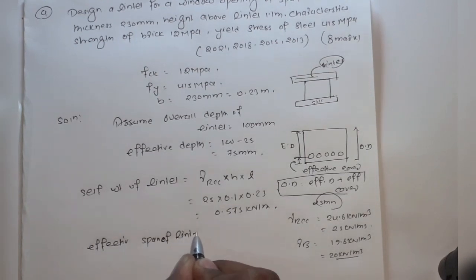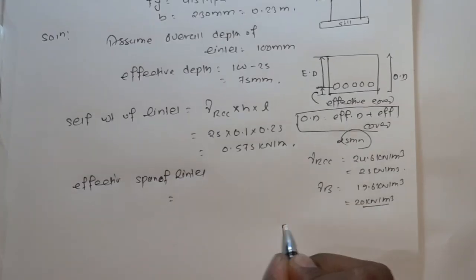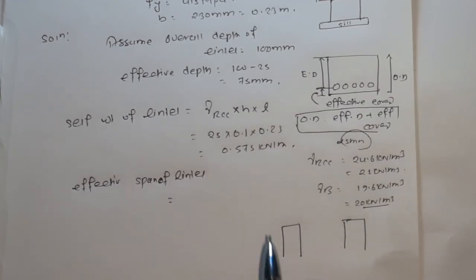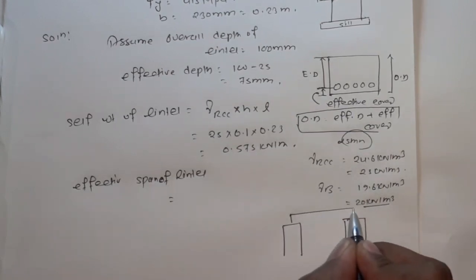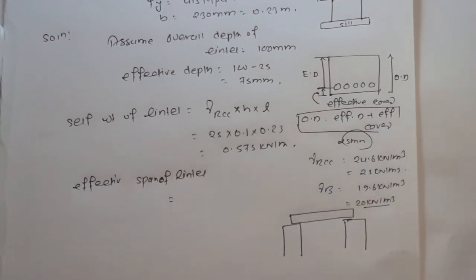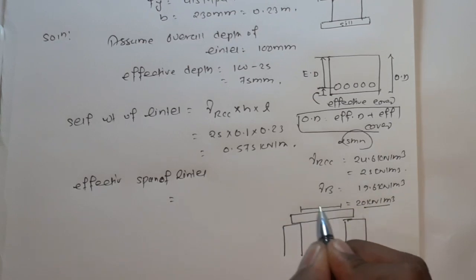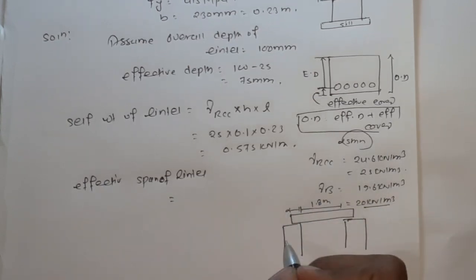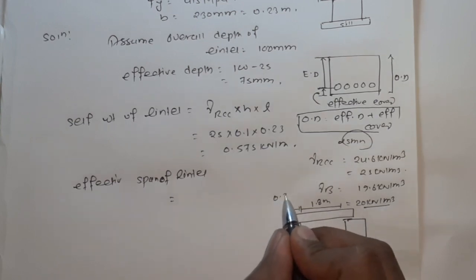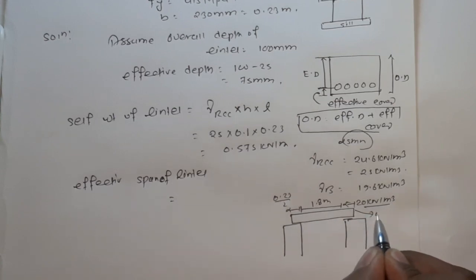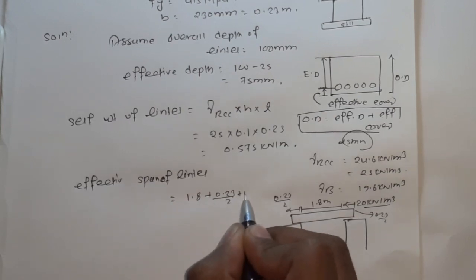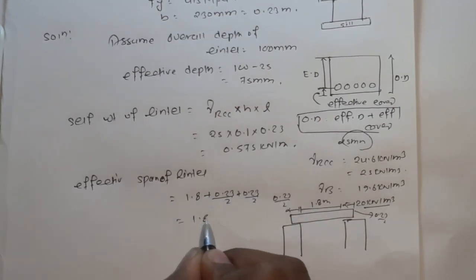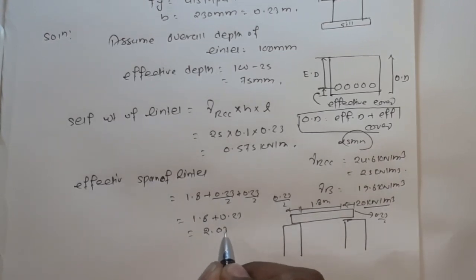Now we calculate the effective span of the lintel. The lintel is provided with bearing on both walls. The effective span equals the clear window opening plus half bearing on each side: 1.8 plus 0.23 divided by 2 plus 0.23 divided by 2, giving an effective span of 2.03 meters.